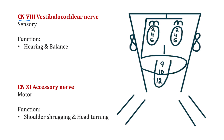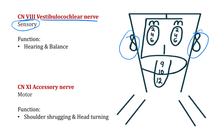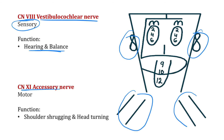Cranial nerve 8, the vestibulocochlear nerve, drawn on the sides like ears, is a purely sensory cranial nerve responsible for hearing and balance. Cranial nerve 11, the spinal accessory nerve, is a purely motor cranial nerve responsible for shoulder shrugging and head turning.